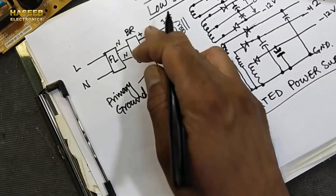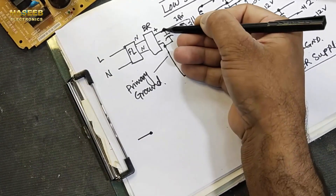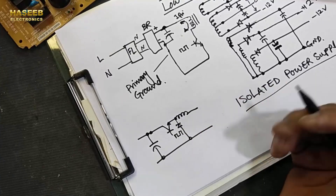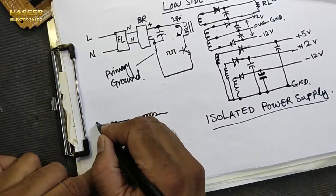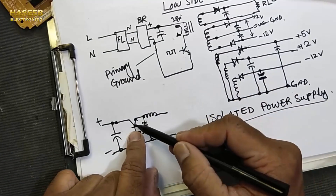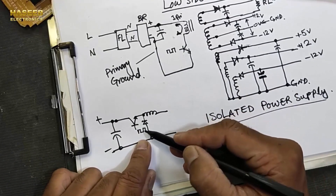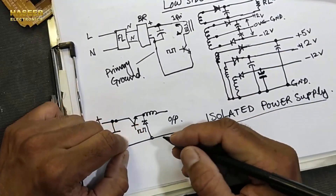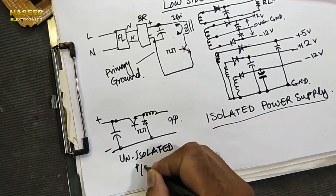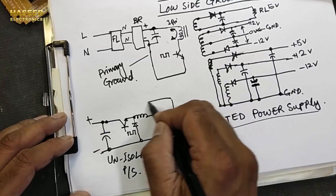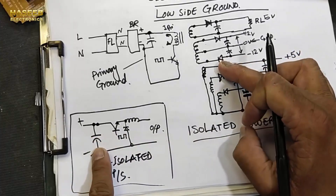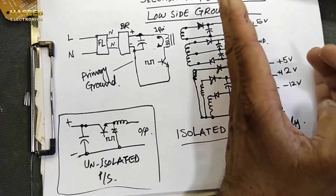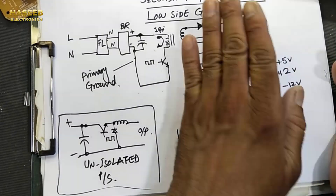Now there is another condition. From this capacitor, at the primary ground point, if we collect a switching device and a switching IC and give the pulse to this inductor (choke), and take output — this is called a buck regulator, an unisolated power supply. So in an unisolated power supply we are using the primary ground in the output, whereas in the isolated power supply the secondary ground is different and isolated from the primary ground.